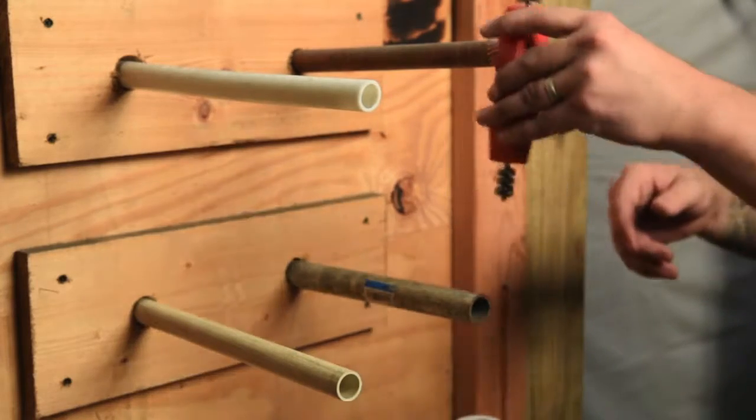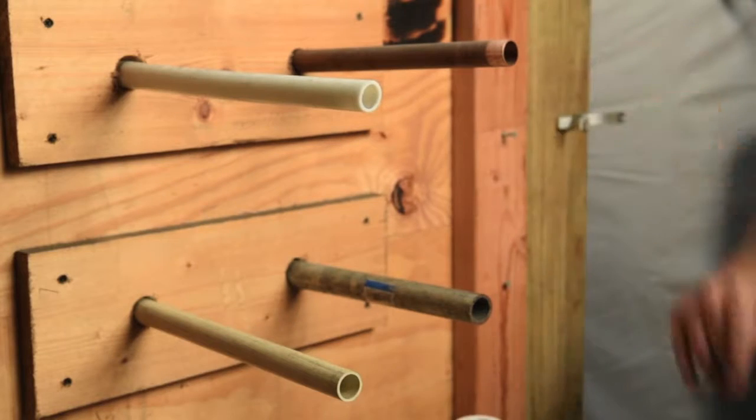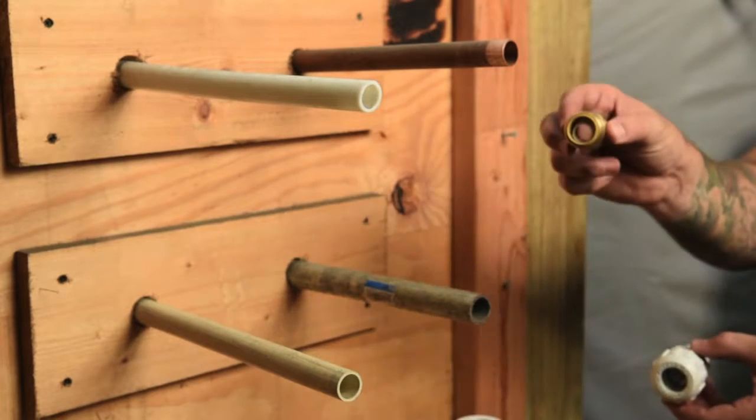With copper you want to sand the connection down with either a four-way sander or sanding cloth. You can either use a compression fitting or a shark bite.